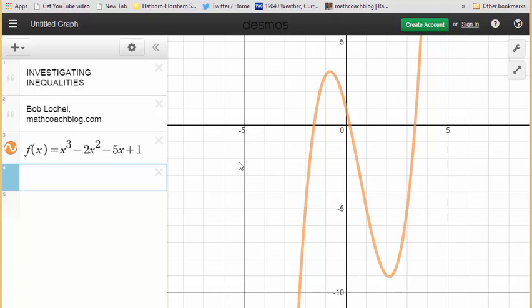So first of all, I have this cubic all set to go here, x cubed minus 2x squared minus 5x plus 1, and I have it graphed and ready to go. So it's an interesting looking graph. What I'd like to know is, at what point does this function take on values greater than negative 1? That is, when is y greater than negative 1?